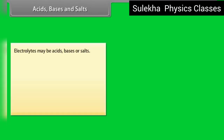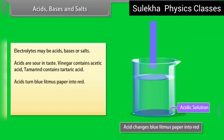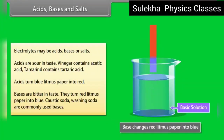Electrolytes may be acids, bases, or salts. Acids are sour in taste. Vinegar contains acetic acid. Tamarind contains tartaric acid. Acids turn blue litmus paper into red. Bases are bitter in taste. They turn red litmus paper into blue. Caustic soda and washing soda are commonly used bases.